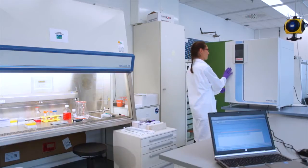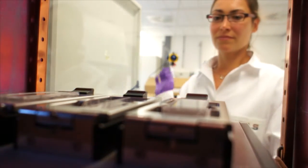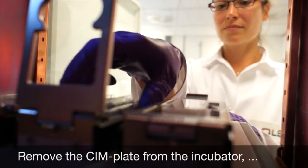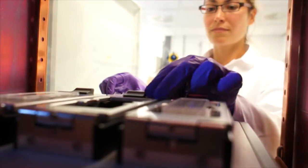Remove the SIM plate from the incubator and seed a defined number of cells into the top chamber of the E-plate. The optimal seeding density for your experiment depends on the cell type and the experimental design.